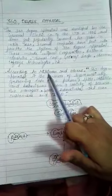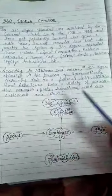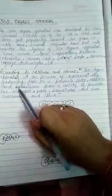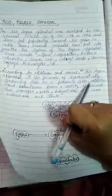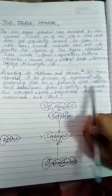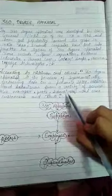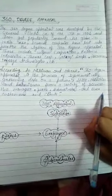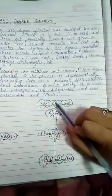According to Milliman and others, 360 degree appraisal is the process of systematically gathering data on a person's skills, abilities, and behavior from a variety of sources: the manager, peers, subordinates, and even customers and clients.